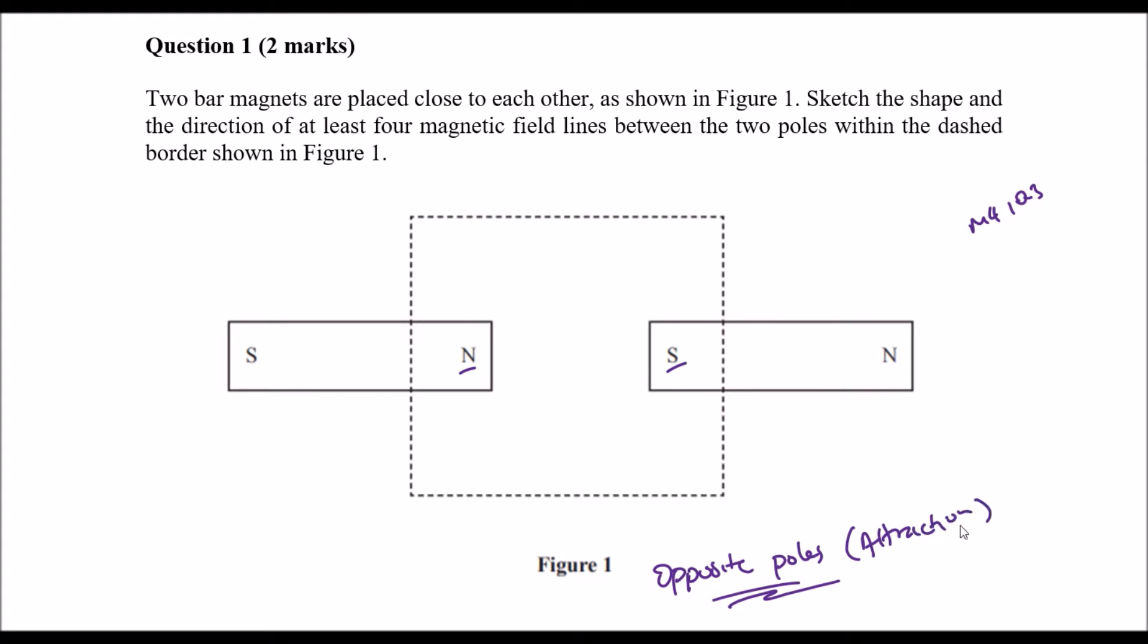To represent attraction with magnetic field lines, the magnetic field lines need to connect with each other. So we'll have something like the North Pole going here, going here and then maybe here, and then here.